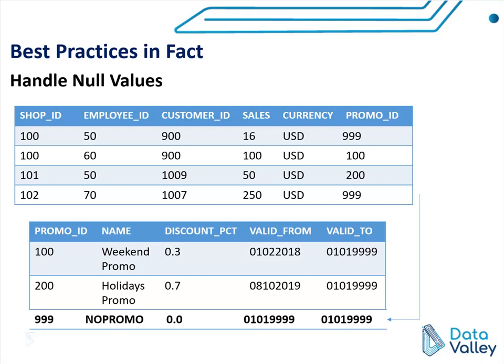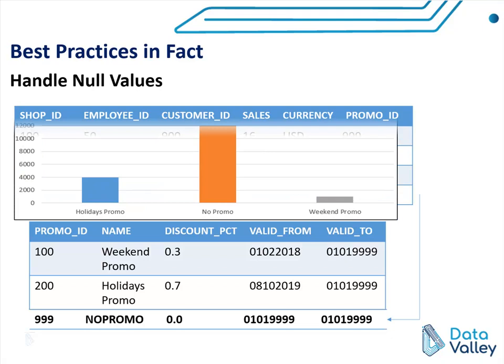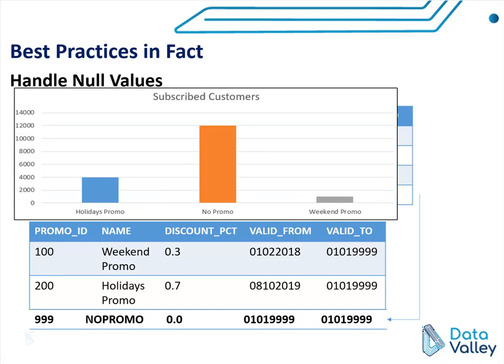By using our ETL process, in case we don't have a promo code for a purchase operation, we will insert the promo ID for the default 'No Promo' value. So if we generate the same report again, we can see that instead of null value, we now have 'No Promo', which is a term that can be understood by any non-technical person — showing that most revenue is coming from purchase operations without using a promo code.